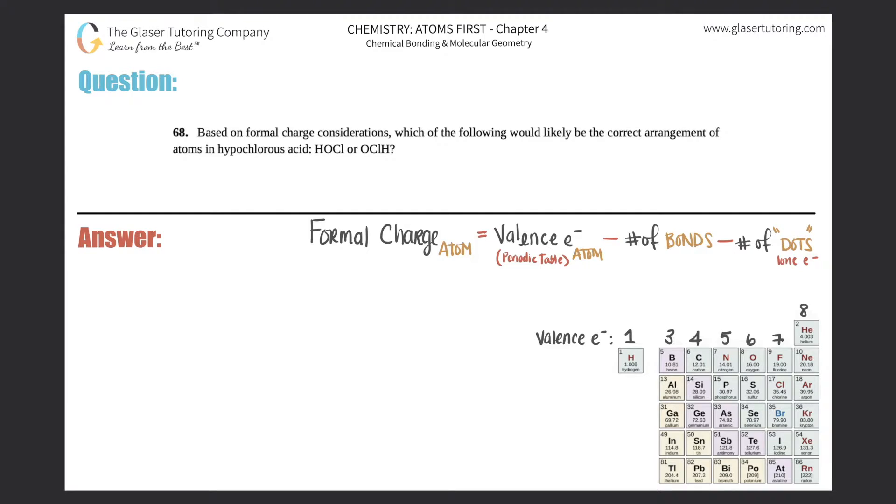Number 68: Based on formal charge considerations, which of the following would likely be the correct arrangement of atoms in hypochlorous acid, HOCl or OClH? This basically comes down to finding the formal charges.